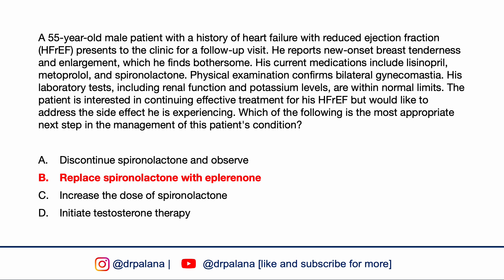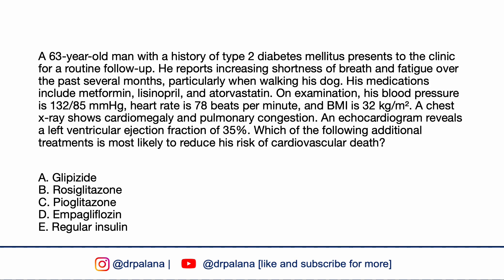A 63-year-old male with history of diabetes presents for routine follow-up reporting increasing shortness of breath and fatigue, particularly when walking his dog. Medications include metformin, lisinopril, and atorvastatin. Blood pressure 132/85, heart rate 78, BMI 32. Chest X-ray shows cardiomegaly and pulmonary congestion. Echocardiogram reveals LVEF of 35%. Which additional treatment is most likely to reduce cardiovascular death risk: glipizide, rosiglitazone, pioglitazone, empagliflozin, or regular insulin?